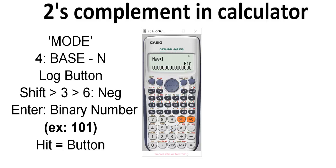After that, enter the binary value such as 1, 0, 1. Now close the bracket and then hit the equal button.